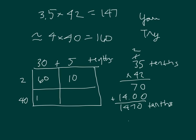40 times 30 is 1,200. 40 times 5 is 200. Add those together, we get 1,400. Add together 70 with 1,400, we get 1,470 tenths. So our standard algorithm matches our area model.